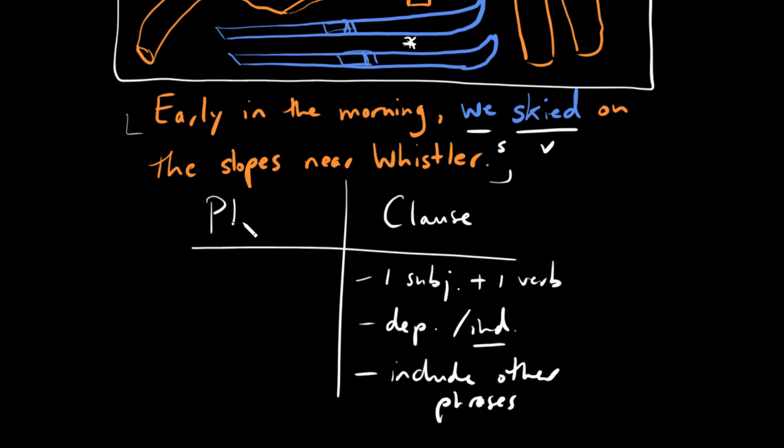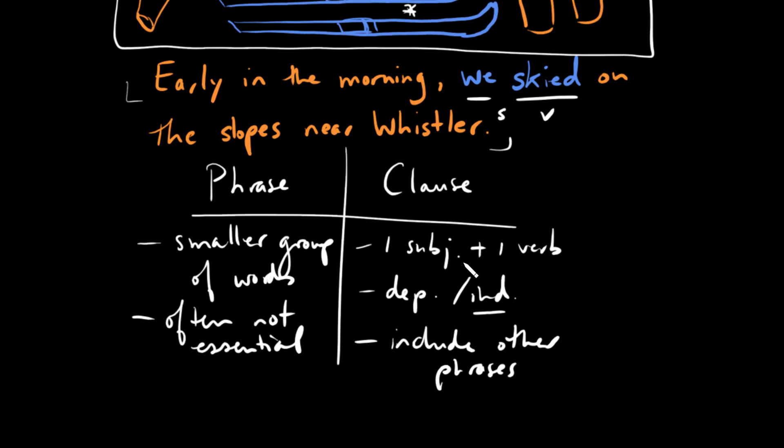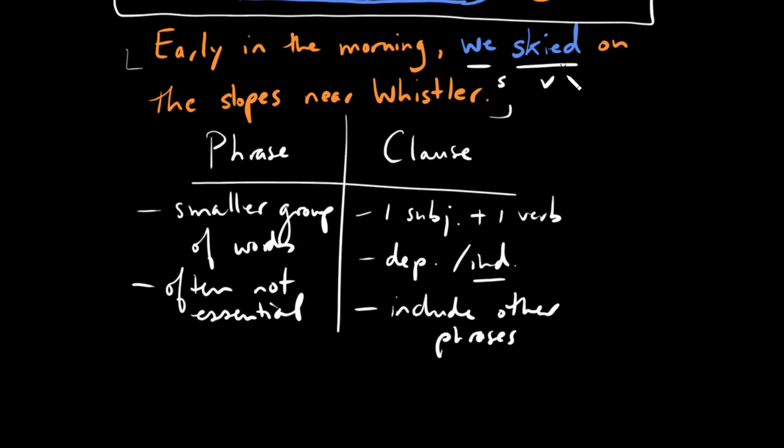What is a phrase then by comparison? Well, a phrase is a smaller group of words, and these words are often not essential, though sometimes some of these words are. For instance, if you have a verb phrase then obviously it's essential because you can't have a sentence without a verb. They also act as parts of speech often. And let me give you an example then of a couple of these things that we've talked about.